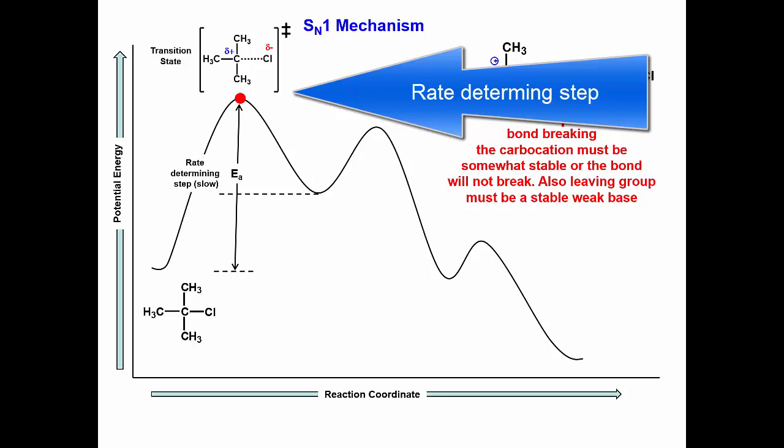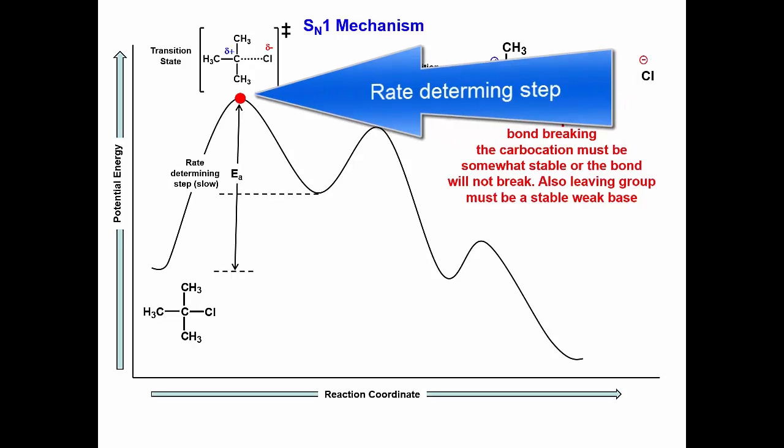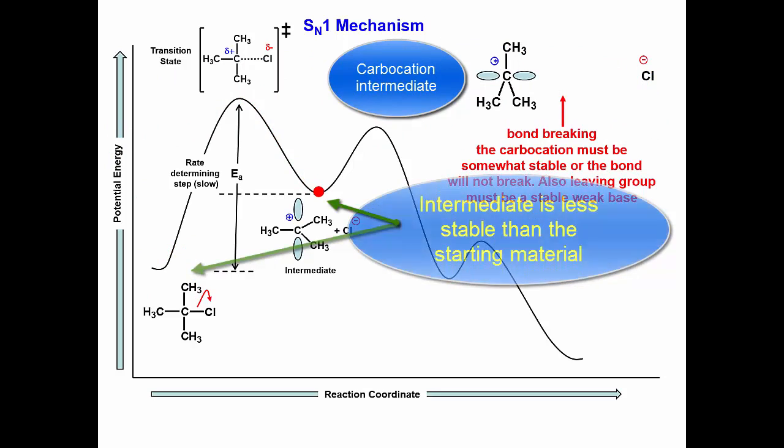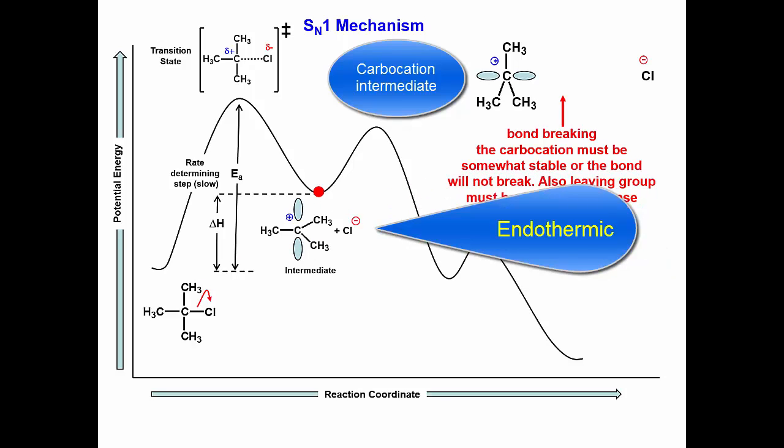If there is enough energy in the system, an unstable carbocation is formed. The carbocation only has six valence electrons and is less stable than the starting material. The carbocation has a higher potential energy than the starting material. Thus this first step is endothermic.